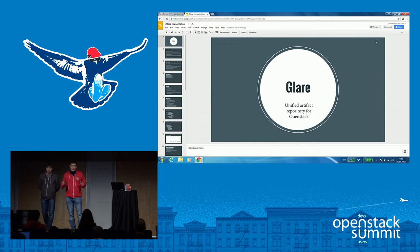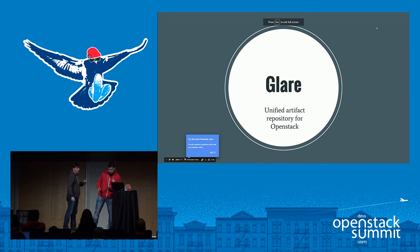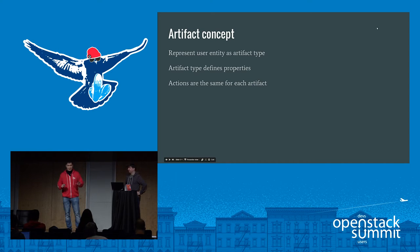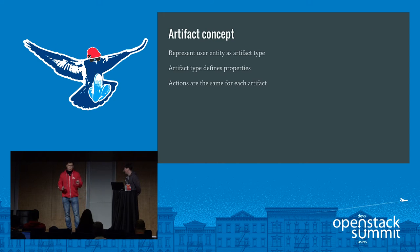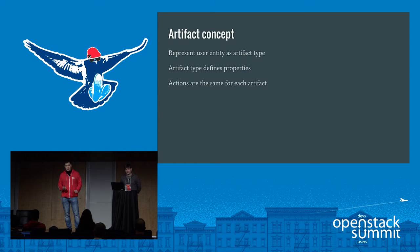Let's start from the basics. What is an artifact? We define an artifact as some user entity represented with an artifact type. It can be a Glance image, Heat template, Heat environment, or anything else. Each artifact type defines which properties are allowed for this entity. For Heat template, it can be environment, template, template version, and so on. Glare itself introduces some typical actions allowed for each artifact: create, upload, download, share, or delete.